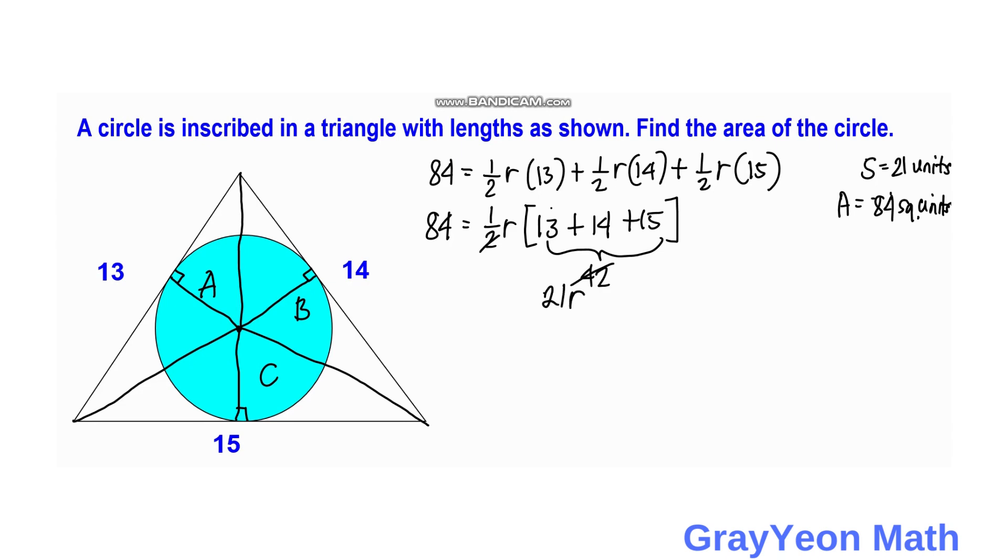So 21R equals 84. Therefore we can say that R equals 84 divided by 21, and that is 4. So the radius of the circle is 4 units.